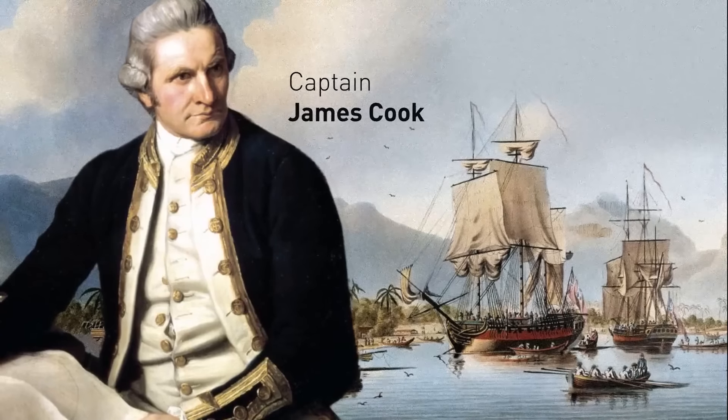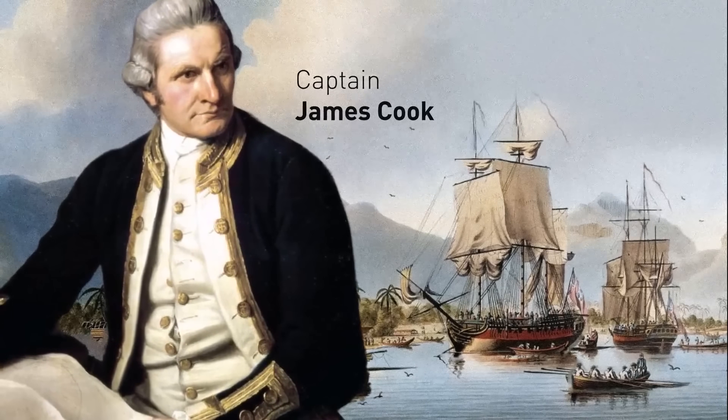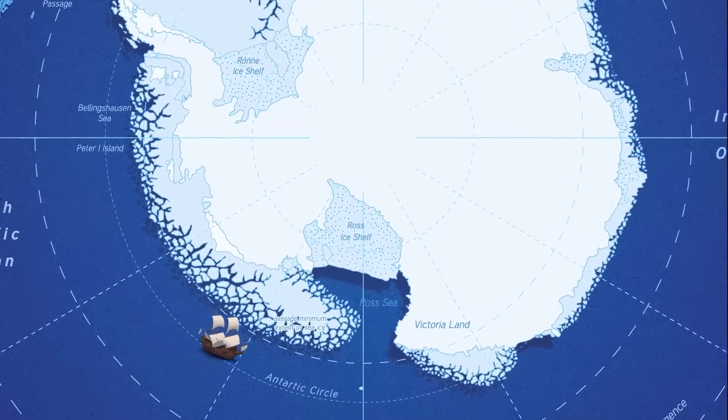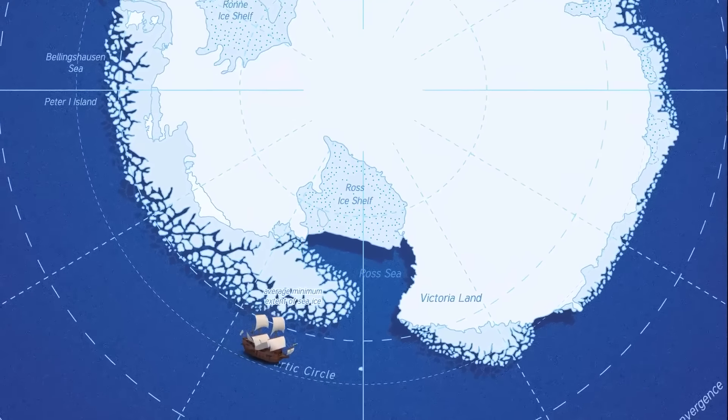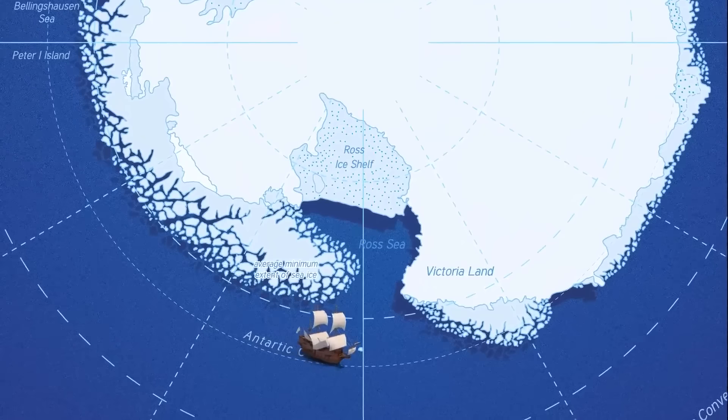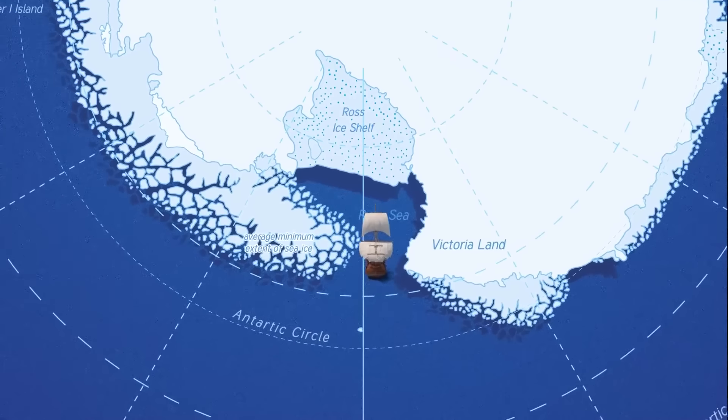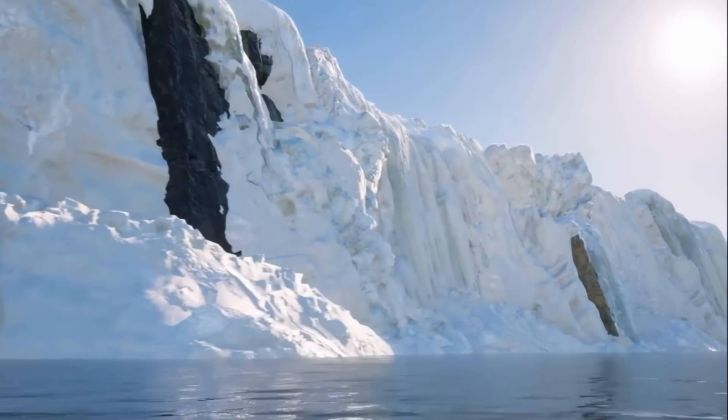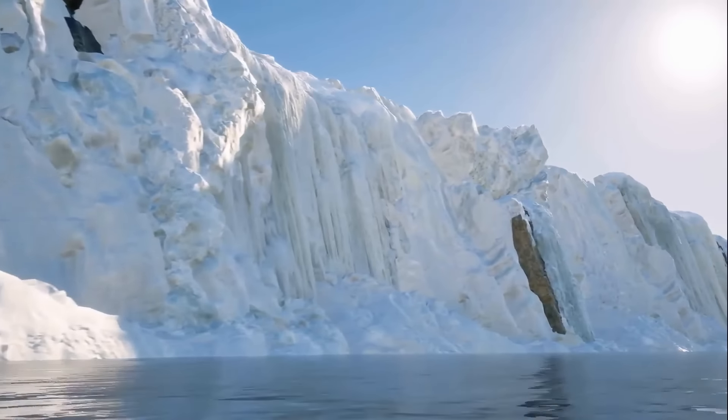Captain James Cook was the first to cross the Antarctic Circle on January 17, 1773, in the Ross Sea region. He reached a point further north a year later, and though he didn't site land, he came to within 50 miles and saw deposits of rock held in icebergs, indicating that a more southerly land existed.